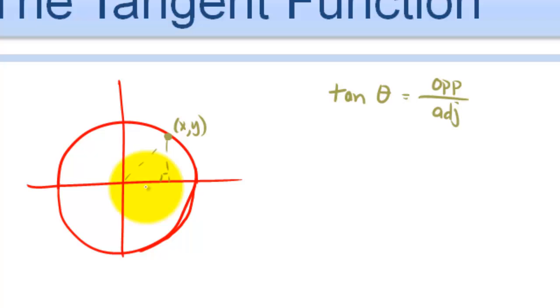In this case, we have this point here x, y, this length would be x, this length would be y, then opposite is just y, and adjacent is simply x. So we are going to be plotting y over x points.